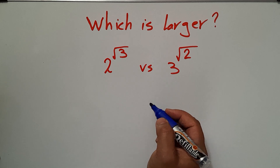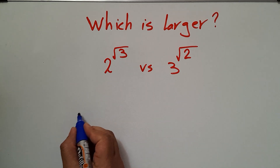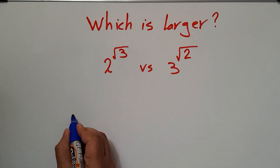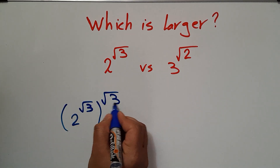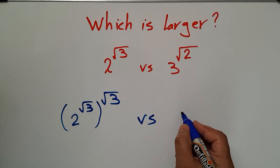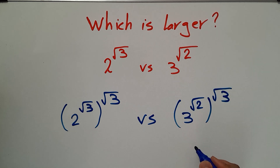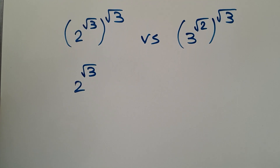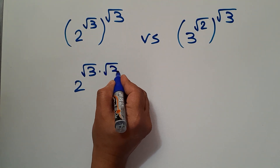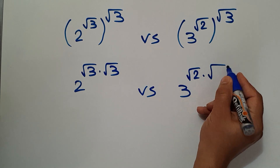In the first step, let's raise both sides to the power of square root of 3. So the left hand side is going to be 2 to the power of square root of 3, to the power of square root of 3, and the right hand side is going to be 3 to the power of square root of 2, to the power of square root of 3. This gives us 2 to the power of square root of 3 times square root of 3, and 3 to the power of square root of 2 times square root of 3.